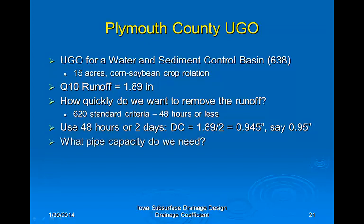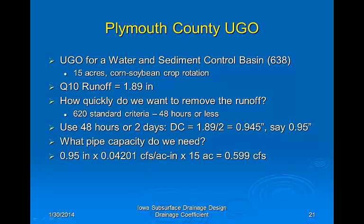Now we can calculate the minimum pipe capacity. Using the same formula as before, we find that the minimum capacity for this Plymouth County site is 0.0599 CFS.